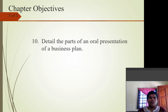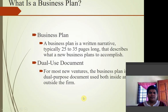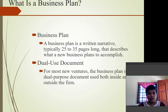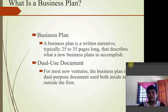A business plan is a written narrative, typically 25 to 35 pages long, that describes what a new business plans to accomplish. Business plans have two purposes — that is why they are called a dual-use document. One purpose is internal, for the employees, and one is external, for whoever is interested in or wants to invest in your business.